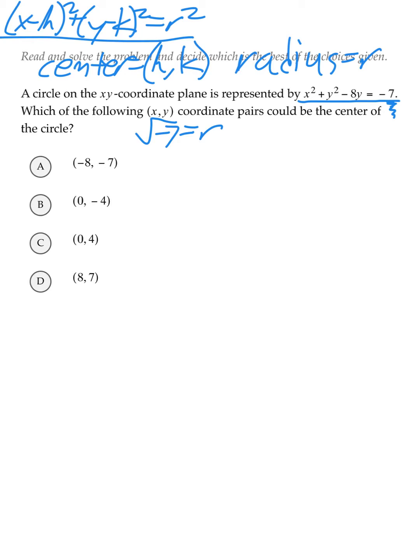In order to complete the square, we need to look at the left side of the equation. And we need to look for a coefficient attached to one of the variables. In this case, it is negative 8. In order to complete the square using this equation, we would take negative 8, divide by 2, which gives us negative 4, and then we would square it, which gives us 16.